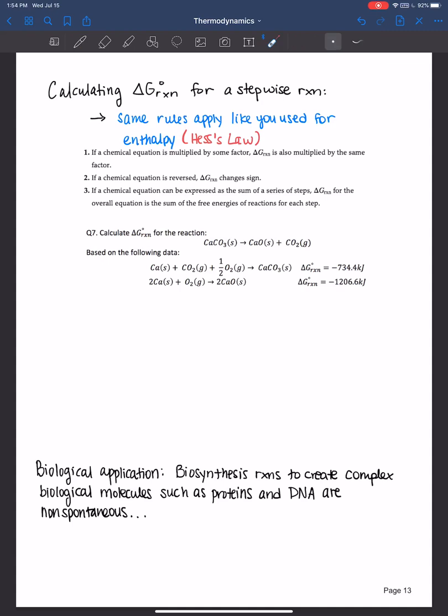If a chemical equation is multiplied by some factor, the Gibbs free energy is also multiplied by the same factor. If you need to reverse a chemical equation, then the Gibbs free energy for that reaction changes sign from positive to negative or from negative to positive.